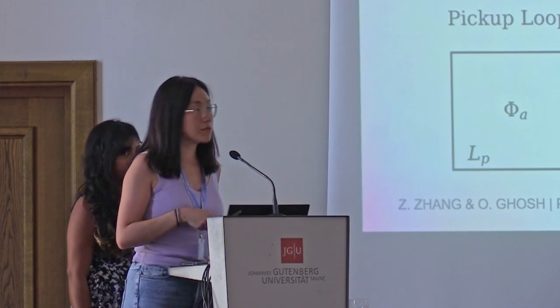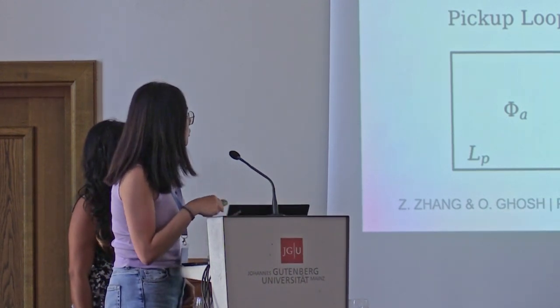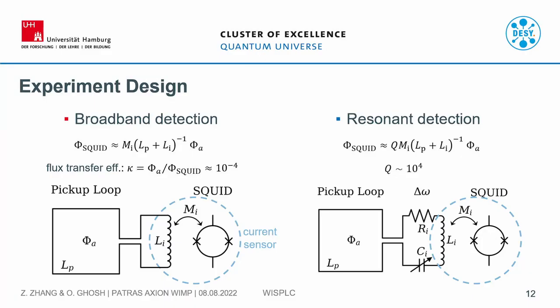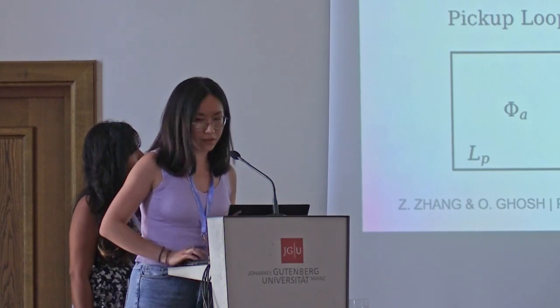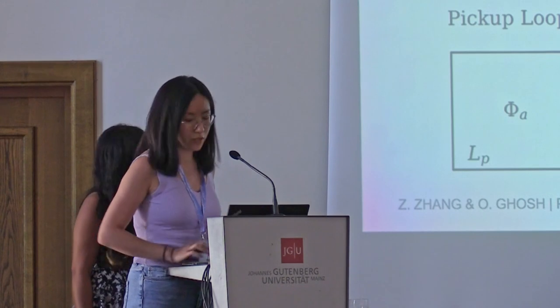To detect the current, we have two detection schemes. The current sensor is represented by the blue circle, which is a SQUID flux-coupled to an input coil called L_I. For broadband detection, we directly connect the pickup loop to the current sensor, and the flux is transferred inductively throughout the whole bandwidth. The flux transfer efficiency is about 10 to the minus 4, with room for optimization. For resonant detection, we connect the pickup loop with an LC circuit that pumps up the magnitude of the flux in a short bandwidth. The amplitude is increased by a quality factor Q, which theoretically can be as large as 10^11, but considering oversampling at lower frequencies, we choose a benchmark of 10^4.